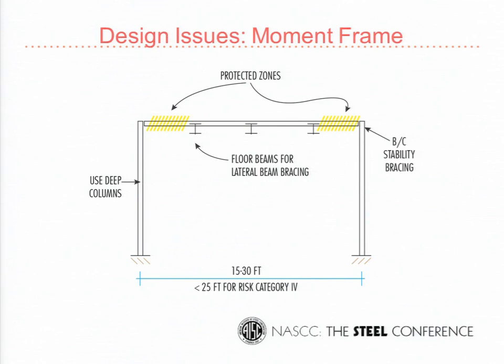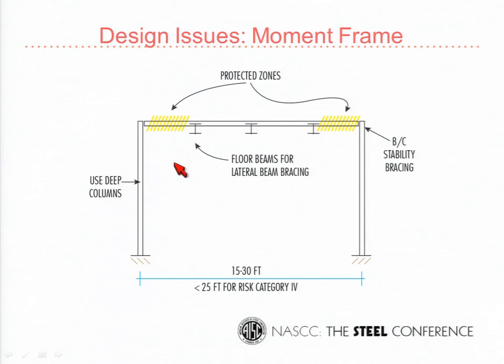On conceptual moment frame design: Scott will go into great detail, but some overarching points. Use deep columns because that's how you make drift work and helps with strong-column weak-beam. Suggest no more than a 30-foot column grid spacing; for Risk Category IV, 25 feet or less is needed to make drift work. Use your floor beams for bracing of the moment frame beams — get it for free by framing it up effectively. If you have a composite slab, the beam-column stability bracing rules aren't a big deal.